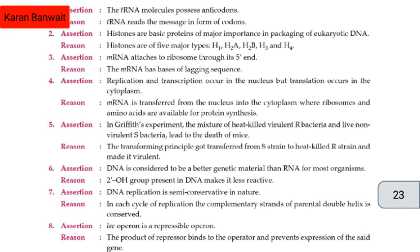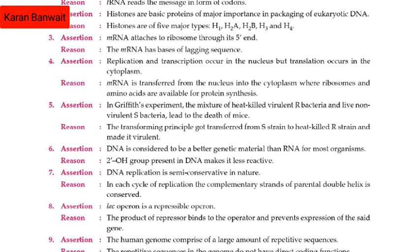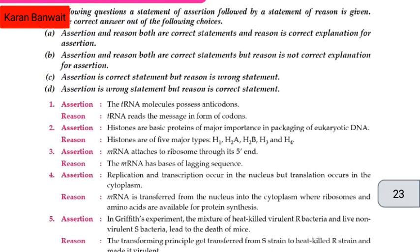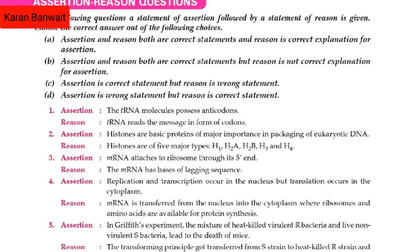Let us go with the fifth assertion. In Griffith's experiment, the mixture of heat-killed virulent S bacteria and live non-virulent R bacteria leads to death of mice. Reason: the transforming principle got transferred from S strain to heat-killed R strain and made it virulent. The right option will be A — assertion and reason both are correct and reason is the correct explanation for assertion.